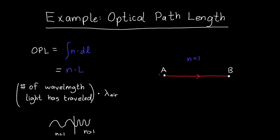Let's start with an example. Let's say we have light that travels from point A to point B. To compute the optical path length you need to know the path that light takes, so you have to specify the path first. Light travels in a straight path from A to B. A is at x equals 0 and B is at x equals D, and the refractive index is equal to 1 — light is just passing through air. Because n is constant and equals 1, the optical path length is just n times the length, which is 1 times D.